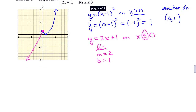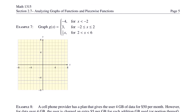Let's look at example 7. g of x equals negative 4 for x less than negative 2; 3 for negative 2 less than or equal to x less than or equal to 2; and one-half x for 2 less than x less than 6. This piecewise function has three parts. Start with y equals negative 4 for x less than negative 2: a horizontal line at y equals negative 4. Since x is strictly less than negative 2, there's an open circle at the right endpoint, and an arrow extending left to negative infinity.